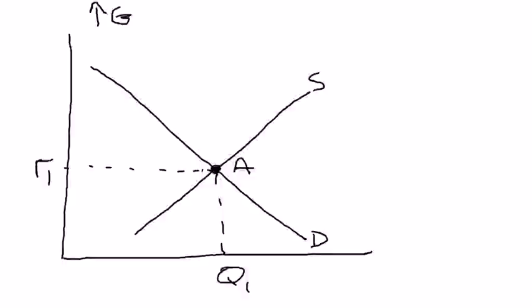This is increased spending on roads and bridges, military — let's say there's a war — and so government spending increases. But everything else we can possibly imagine that influences any of these curves is held constant.